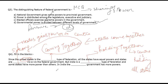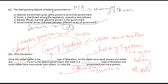Some states have more power than others — in India, the central government has more powers. It is clearly mentioned in the constitution that if there is any confusion between power sharing, the power will automatically be dominated by the central government. So there is a clear mention in the constitution that the central government will be dominating, and central government power is greater here.